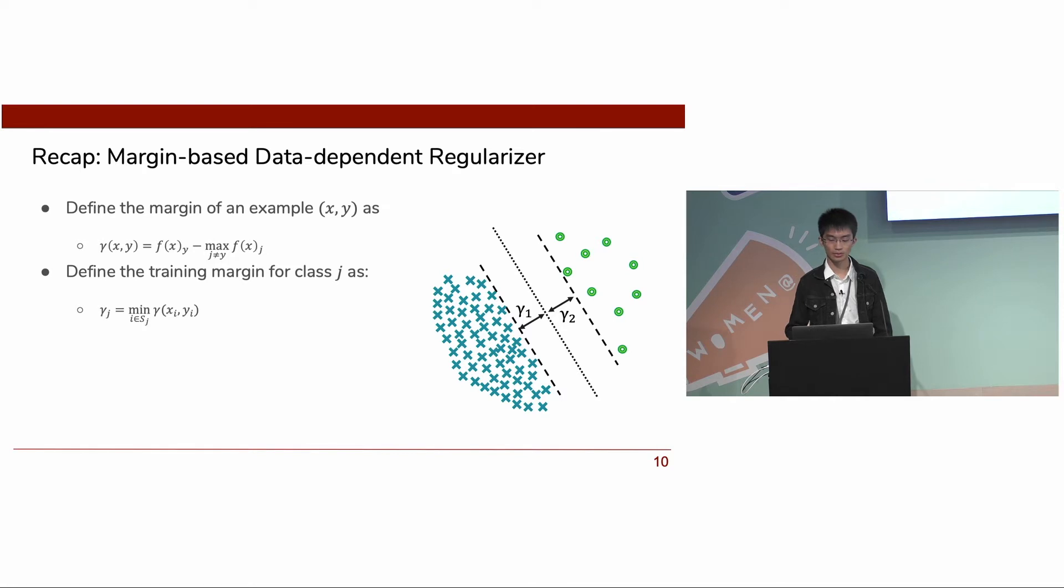The training margin of class j is defined as the minimum margin among all the samples in that class. To simplify our problem, we consider a binary classification problem. We denote the number of samples in each class as N1 and N2.